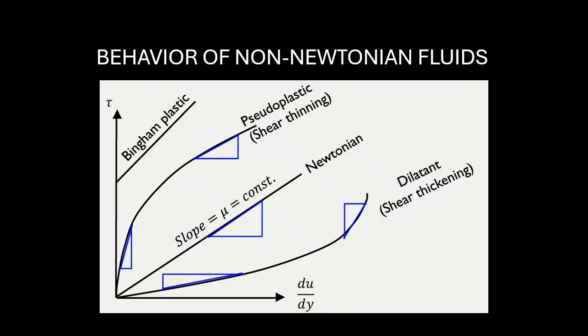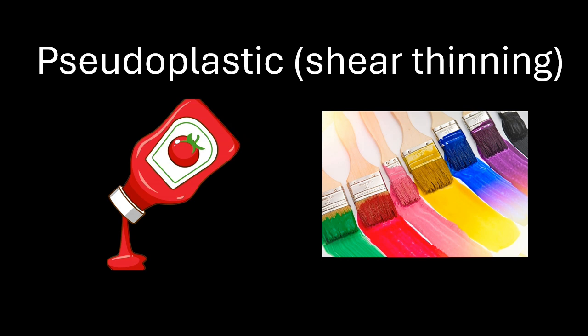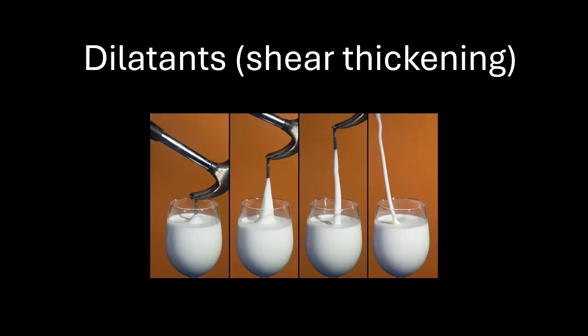We have behavior of non-Newtonian fluids, you have several types, like Bingham plastic, shear thinning, Newtonian, and shear thickening. Bingham plastic like toothpaste and mayonnaise, while shear thinning like ketchup and paints. And finally, shear thickening, which is like cornstarch. So every time you pour or splash, viscosity decides how dramatic it gets.